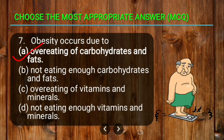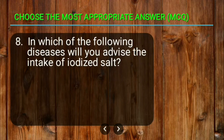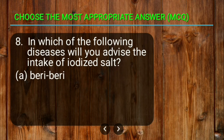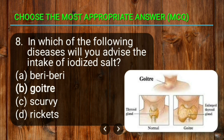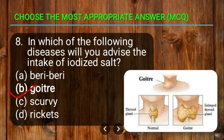Question eight: in which of the following diseases will you advise the intake of iodized salt? The options are beriberi, goiter, scurvy, and rickets. The correct answer is goiter, because goiter generally occurs due to deficiency of iodine, so it is generally prescribed to patients to have iodized salt.